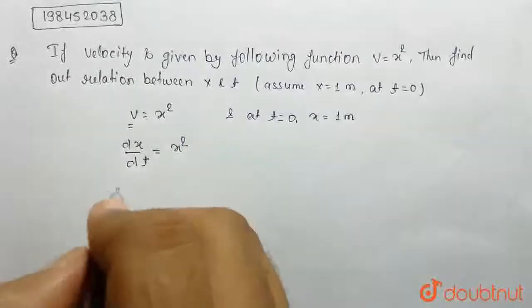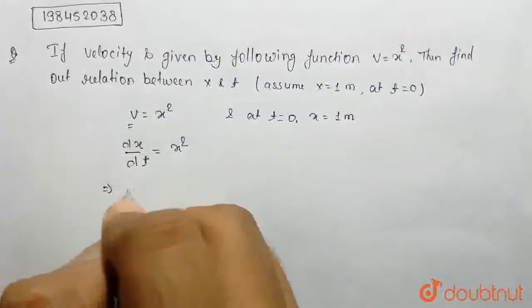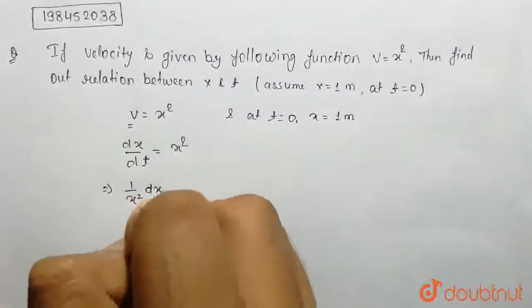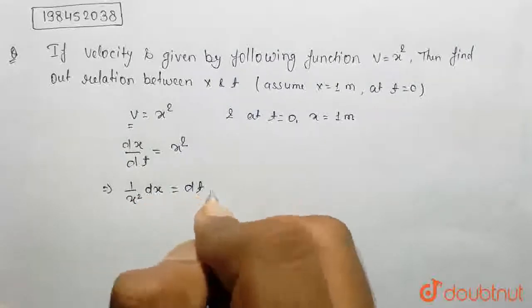Is it equal to x squared? So, 1 by x squared dx is equal to dt.